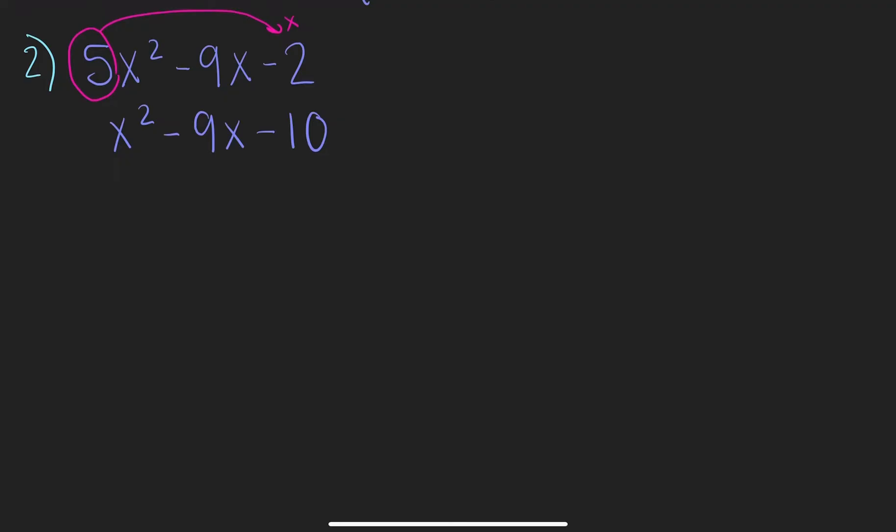Let's factor that. I need two numbers that multiply to be the last number, negative 10, and add to be the middle number, which is negative 9.